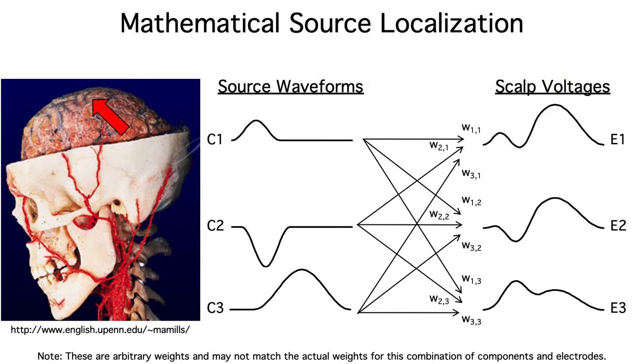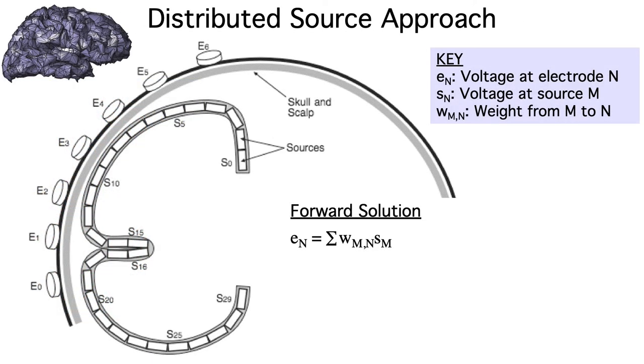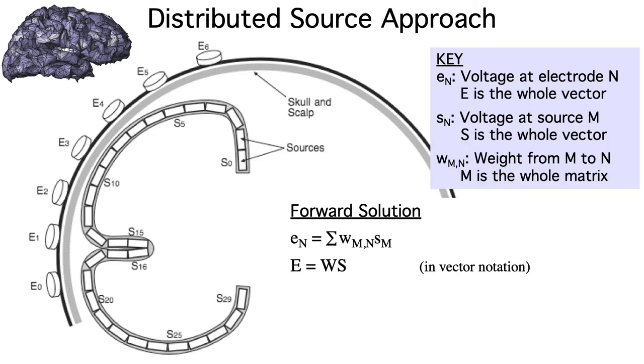Remember that the weights are just constants, and we can estimate them from a structural MRI scan. We can take our summation equation and convert it into vector notation. The vector of the voltages at the electrodes, E, is equal to the vector of source activations, S, multiplied by the matrix of source to electrode weights, W.